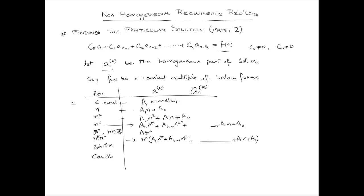If we have a trigonometric function such as sin(θn) or cos(θn), then the particular solution will be a·sin(θn) + b·cos(θn), a linear combination of two independent solutions. The same applies for cos(θn). Now let us explain this with an example.